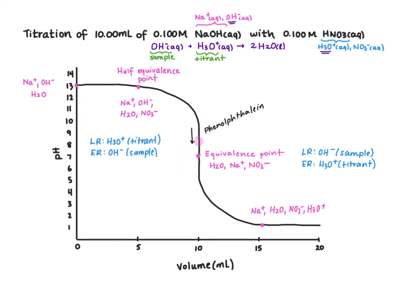Another option for our indicator would be bromothymol blue, which would be blue just above our equivalence point at pH 7.6. It would be green over our equivalence point down to a pH of 6, and then it would be yellow. And so bromothymol blue would see that color change from blue to green to yellow, and we would have two endpoints we could use to determine our equivalence point.